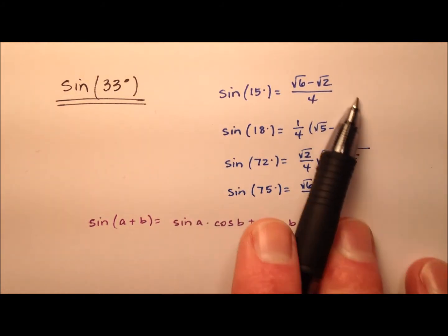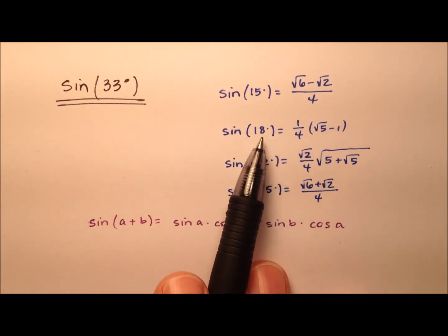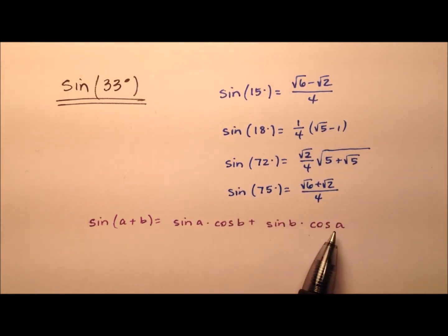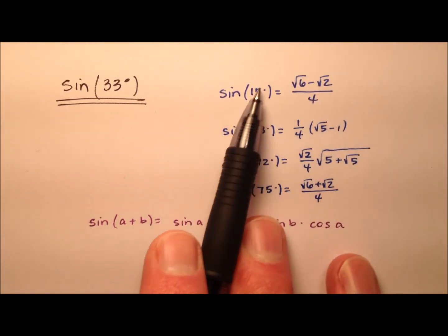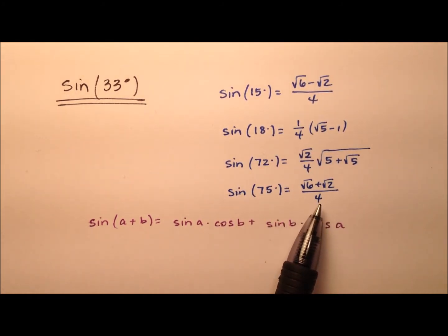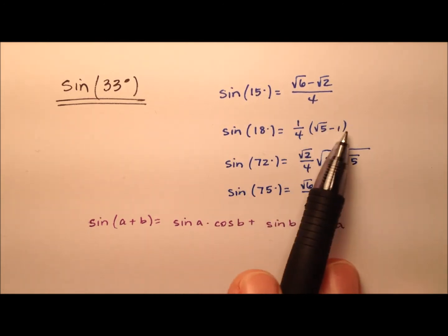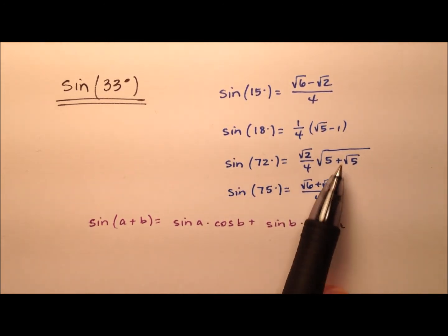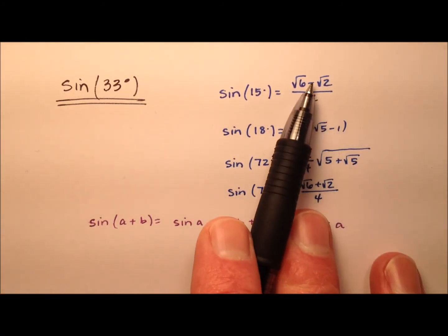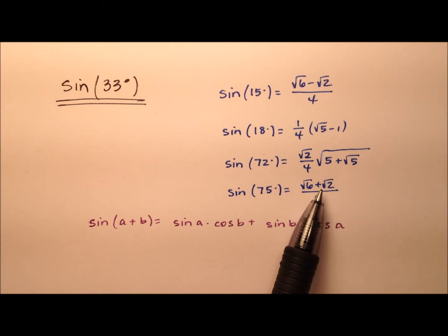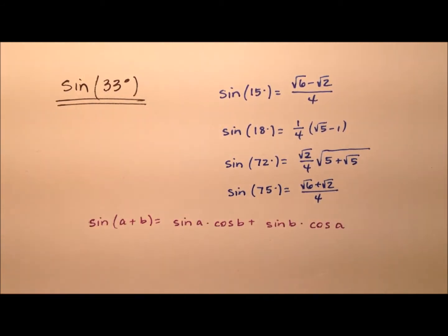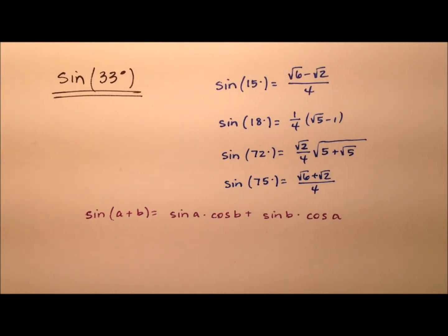Now here I have written four values: the sine of 15 degrees, 18, 72, and 75. These are values that we'll need in this computation, but down in the video description I have links to four videos where I've worked out these values from scratch. I'm going to need these values to find the sine of 33 degrees, but I'm not going to take the time in this video to show you where all four of them come from. So let's go ahead and get started.